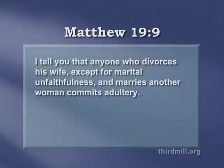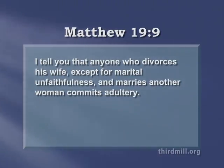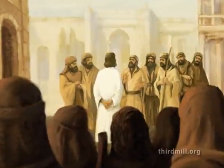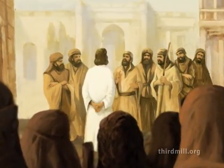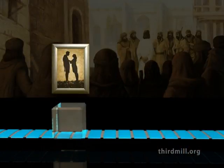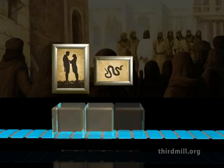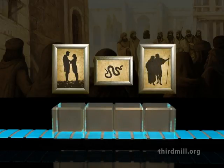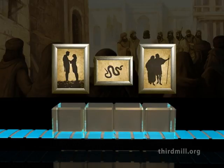As we read in Matthew chapter 19 verse 9, we see that Jesus understood marriage and divorce in the light of diachronic developments in Old Testament theology. At first, divorce was unthinkable. Later, when sin had hardened the hearts of God's people, divorce was permitted but not endorsed. In this case, a change in the human condition led to a change in Old Testament theology. The way that Jesus handled the Old Testament here demonstrates that treating Old Testament theology diachronically is legitimate and important for us today as well.